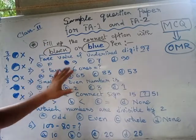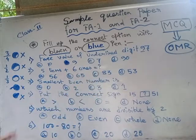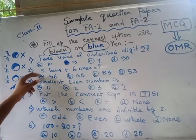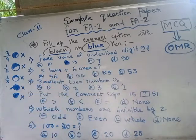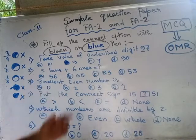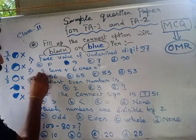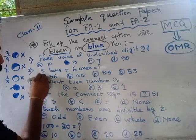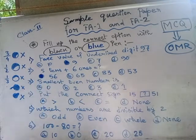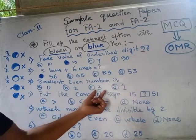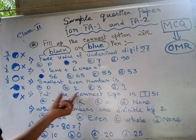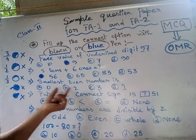The next question: five tens and six ones. Five tens is fifty, and six ones is six, so that means fifty-six. So the answer is option A — fill up option A. For the next question, 'smallest even number': the even numbers are zero and two, so zero is the smallest even number.